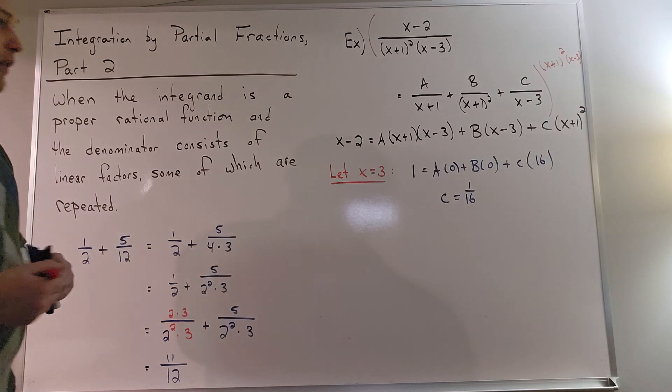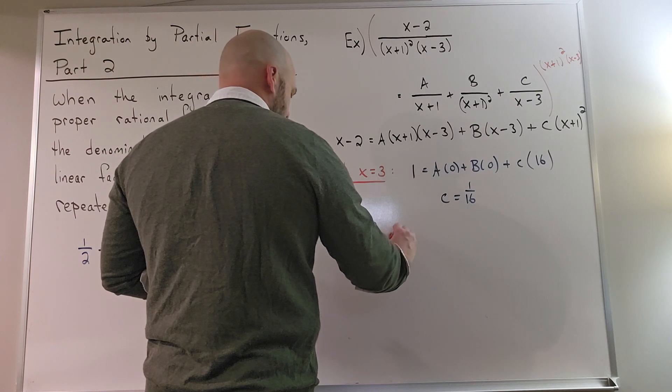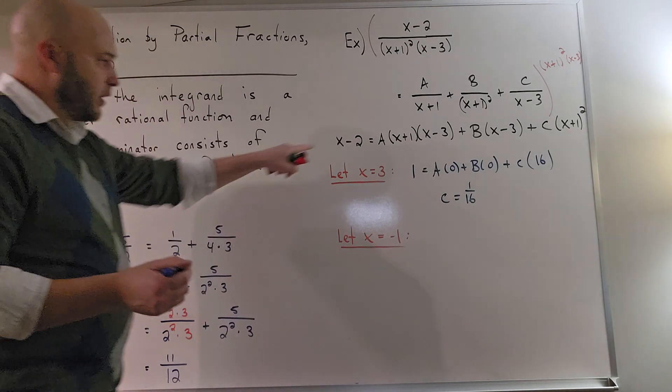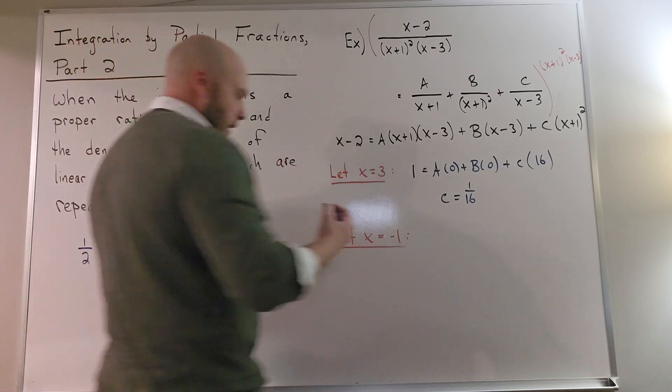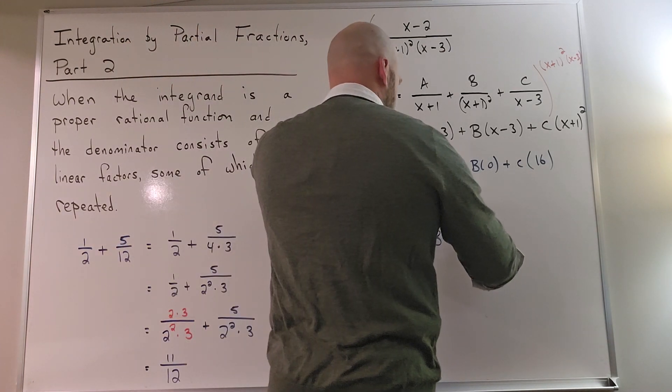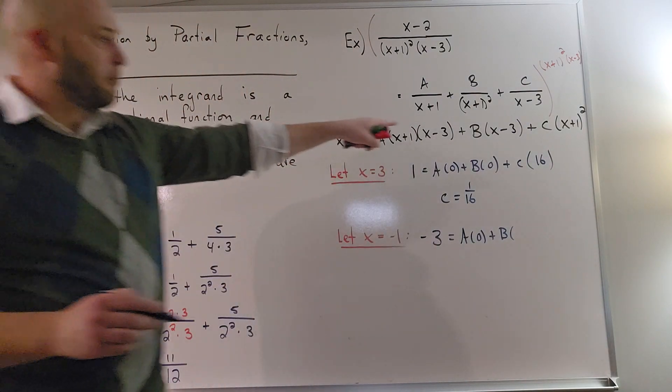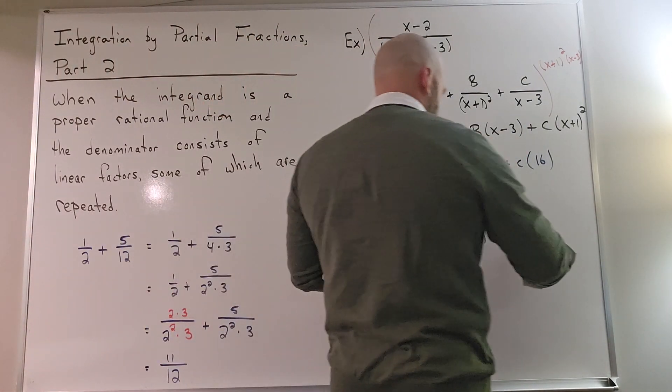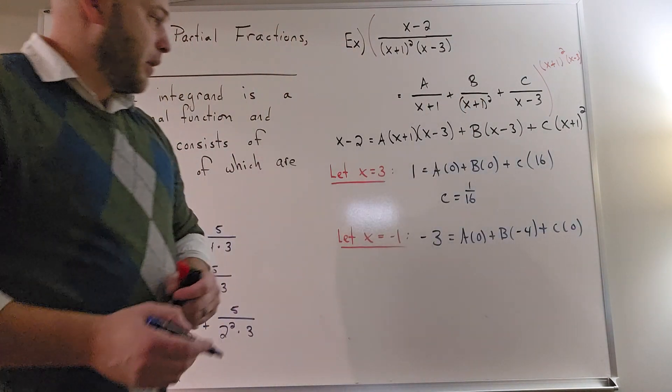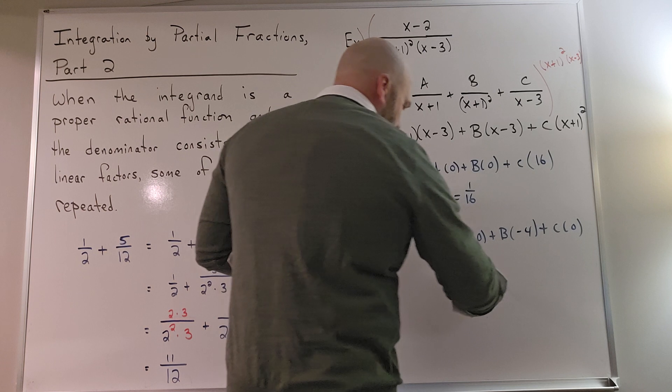Let's choose our other convenient value. Let x equal negative 1. Plug in negative 1 everywhere where you see an x. Over here, I've got negative 1 minus 2, which would be negative 3. Over here, I get a times 0, plus b times negative 1 minus 3, which would be negative 4, plus c times 0. Therefore, since that's 0 and that's 0, divide both sides by negative 4, I get b is equal to 3/4.